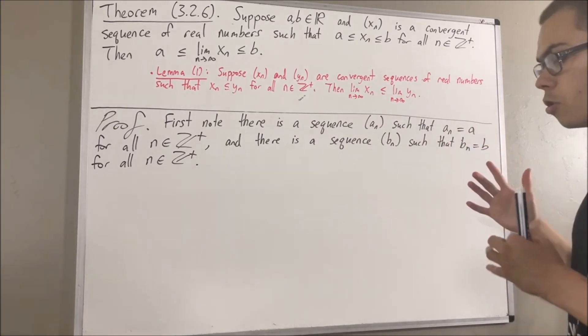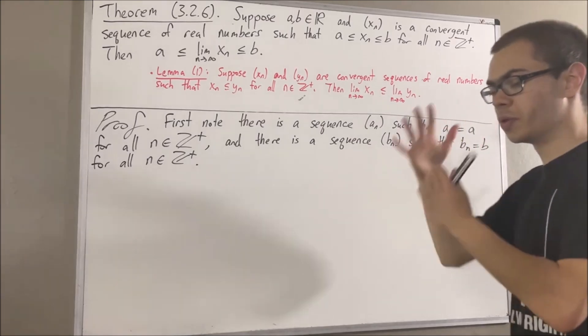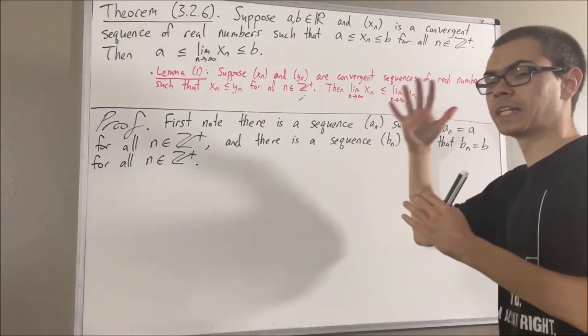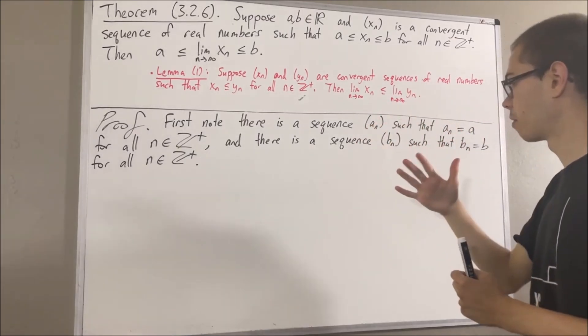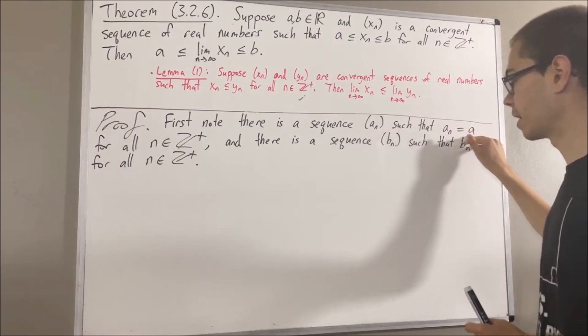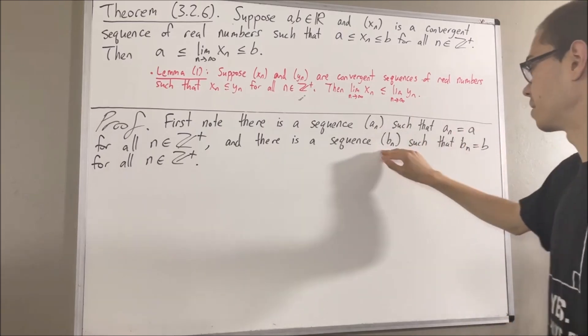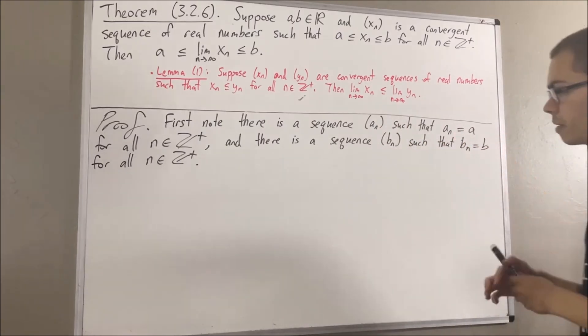And if you recall, we know the limit of a constant sequence. The limit of an is just going to be a, and the limit of bn is just going to be b.